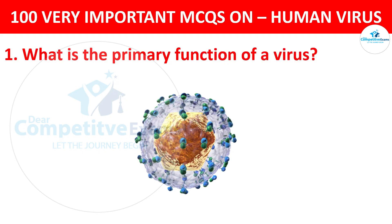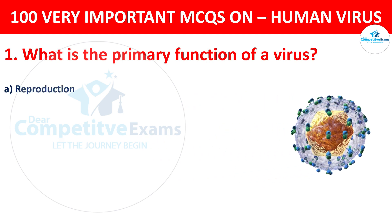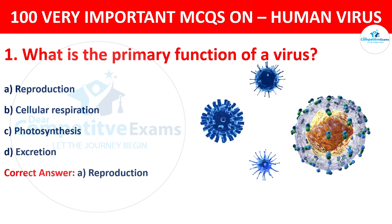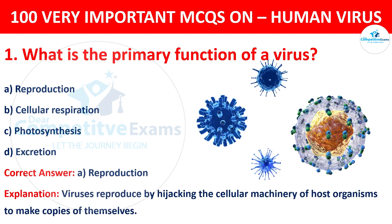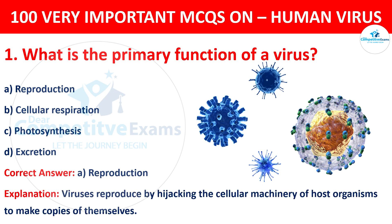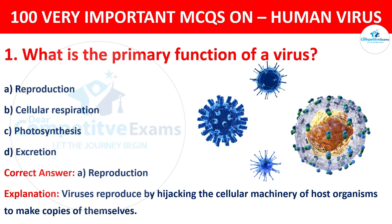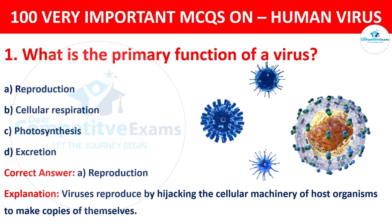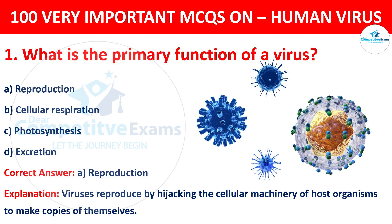What is the primary function of a virus? Your options are reproduction, cellular respiration, photosynthesis, or excretion. The correct answer is A, that is reproduction. Viruses reproduce by hijacking the cellular machinery of the host organisms to make copies of themselves.